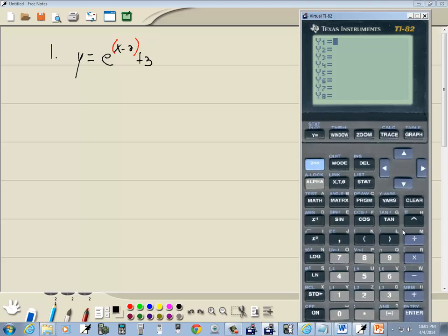So press y equals, press clear. You see above your ln, it says e to the x. So to get to that, I'm going to do second and then ln. That's actually a natural log. But students click better if I say ln. Notice it does not put a beginning parentheses. So we're going to do that. So I'll put a beginning parentheses and then x minus 2, closing parentheses, and then I'm going to put my plus 3. And then graph.